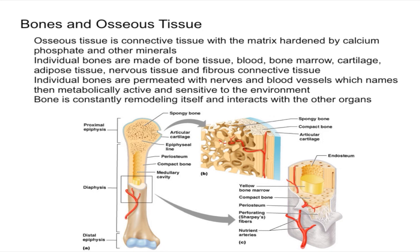Individual bones consist of a lot of components, and as you can see in the diagram, you can see the blood vessels and nerves that go into bones as well. Because individual bones are permeated with nerves and blood vessels, this makes them metabolically active and sensitive to the internal environment.